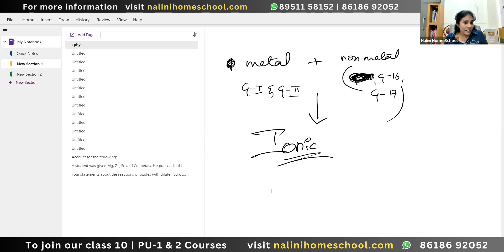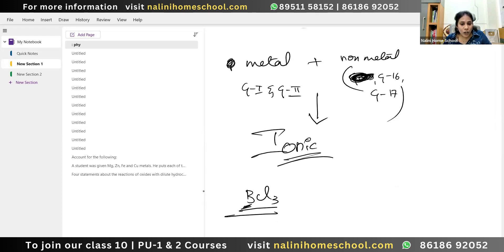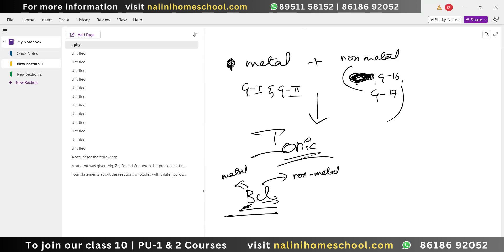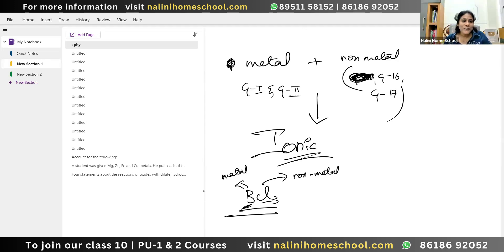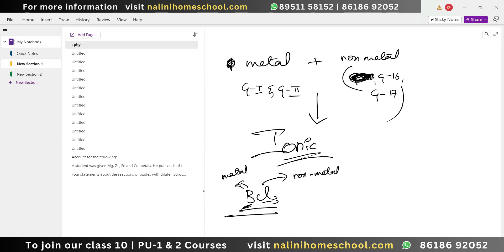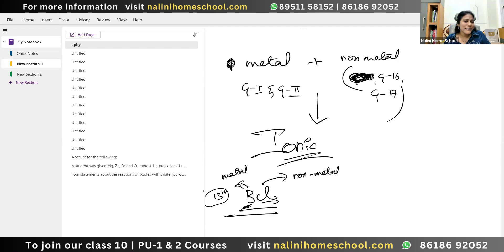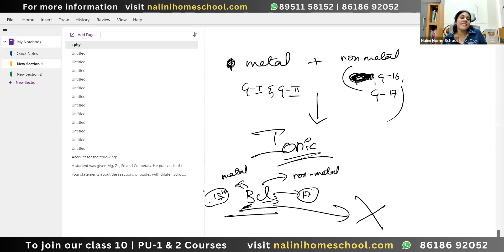Now answer BCl3 — ionic or covalent? Boron is always the first element, the metal. Is boron coming under group 1 and 2? No. Boron comes in the 13th group. Chlorine is in group 17, but boron is not in group 1 or 2. So BCl3 is not an ionic compound.